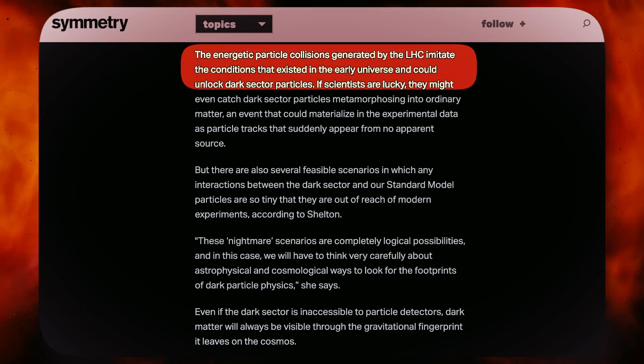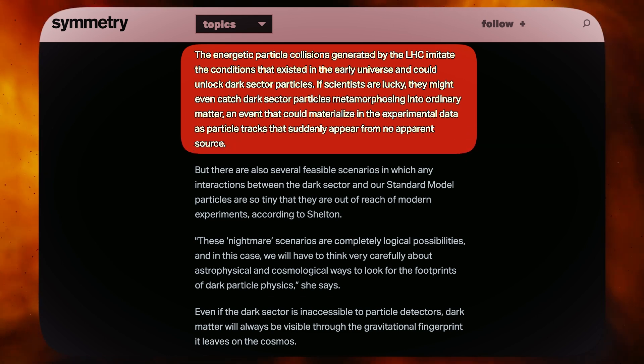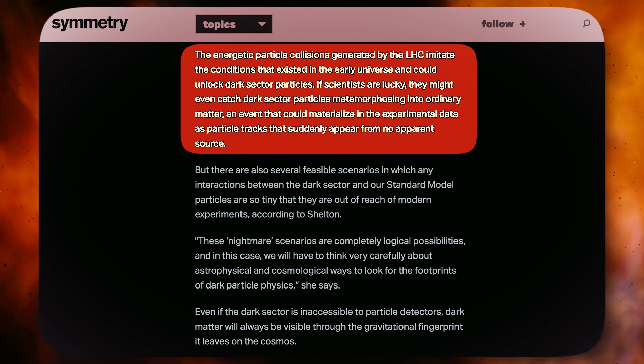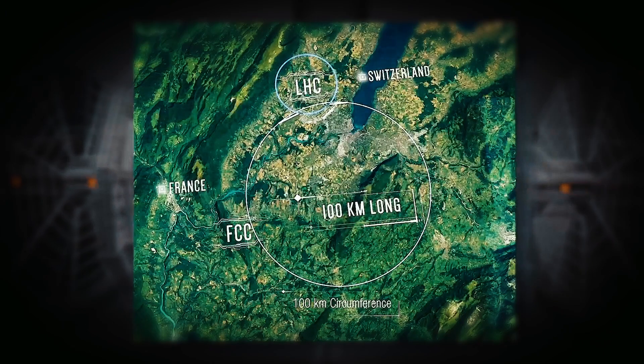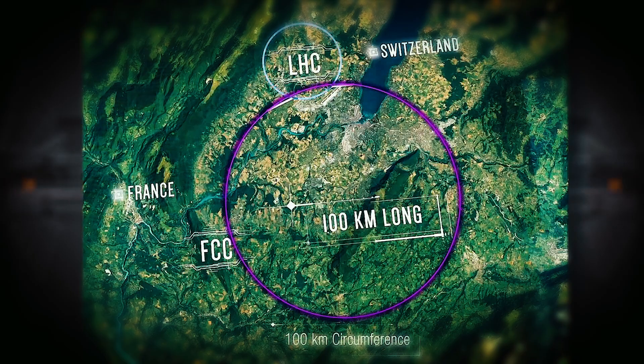Researchers suggest that during the early stages of the universe, regular particles could have transformed into dark particles and vice versa, adding weight to this theory. To conduct experiments at such extreme energies, scientists require a more powerful collider than what is currently available.